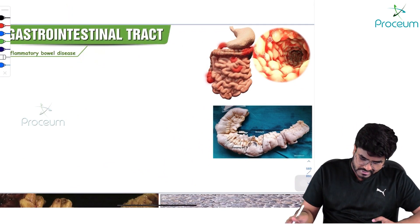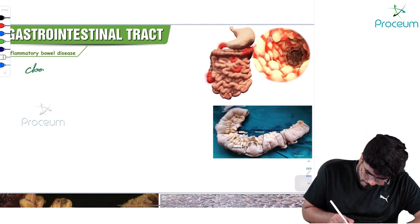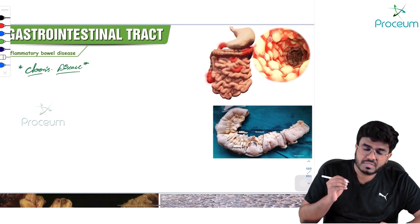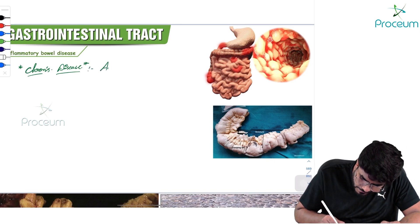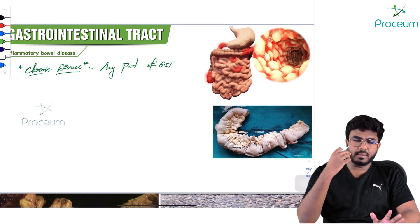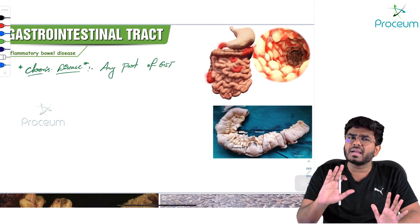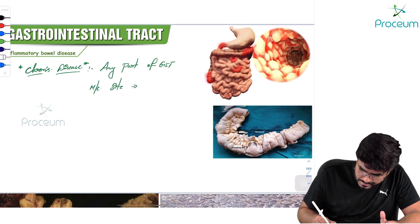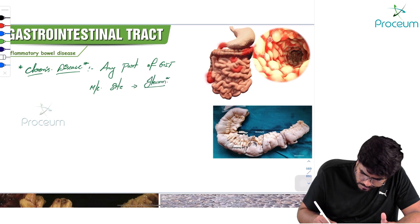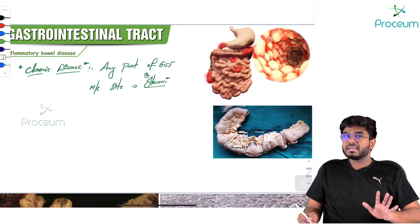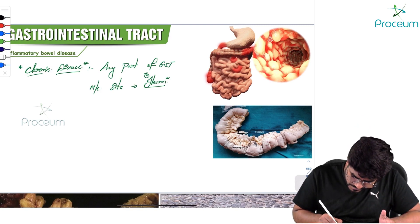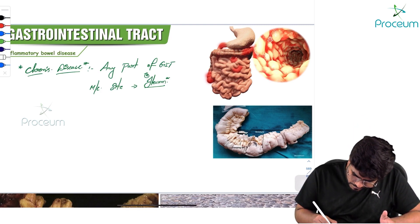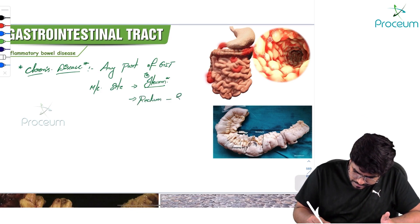The first inflammatory bowel disease I am going to discuss is Crohn's disease. In Crohn's disease, any part of the GIT can be affected — starting from the mouth all the way to the rectum. But the most common site is the ileum. However, rectum is usually spared from inflammation.